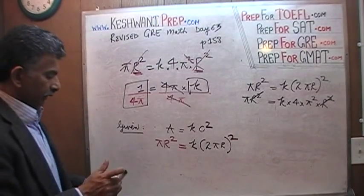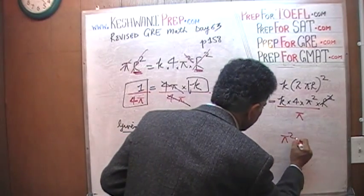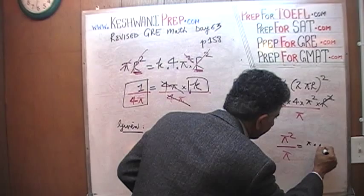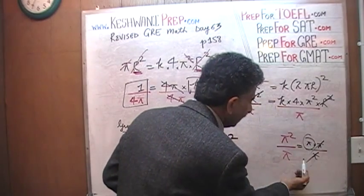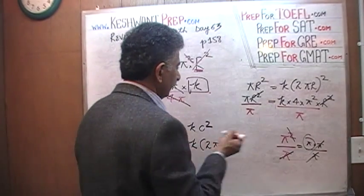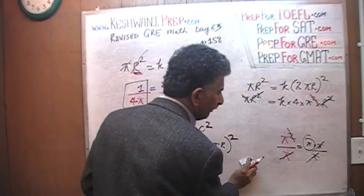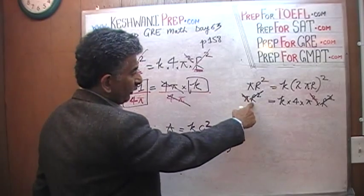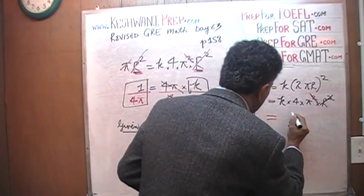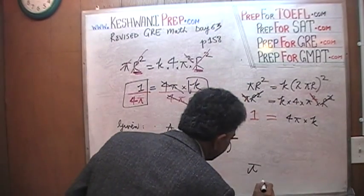We are going to do the next step. Let's divide this side of the equation by pi, and let's divide this side of the equation by pi. So what we have here is pi squared over pi. Pi squared over pi is simply pi — it's pi times pi over pi, so one pi drops out and we are left with just one pi. This pi drops out and the square goes away, leaving it to the first power. So this pi drops out and this becomes one.